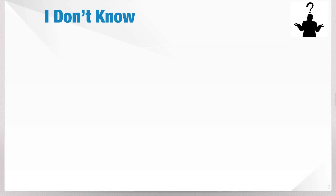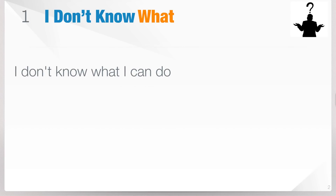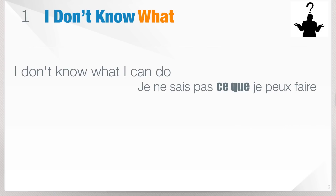So let's start with the first expression: 'I don't know what.' In French, we've got three different cases to translate 'what.' The first one is 'I don't know what I can do.' Here, 'what' is ce que: Je ne sais pas ce que je peux faire.